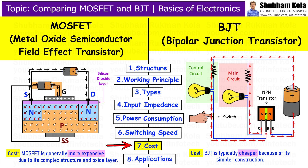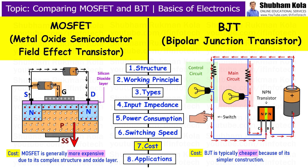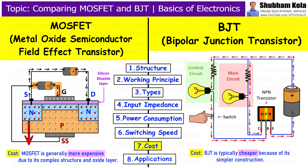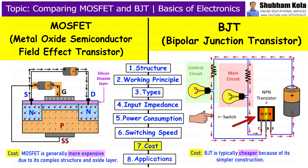Next is cost. Considering cost, there are also differences in the manufacturing and application of these devices. MOSFET is generally more expensive due to its more complex structure, particularly the oxide layer between the gate and channel. However, it is still commonly used in many applications because of its superior performance, low power consumption, and high speed. BJTs are typically cheaper to produce because of their simpler structure, and are often used in analog applications where cost is a critical factor. BJTs are still widely used in certain low-cost power amplification circuits.